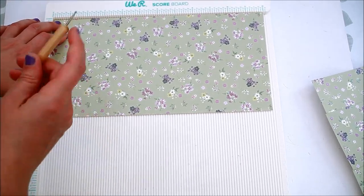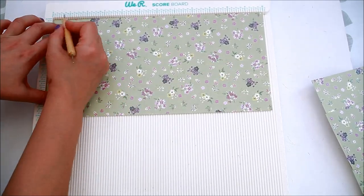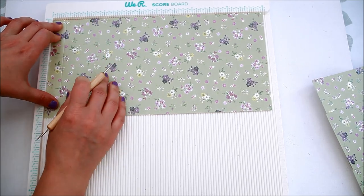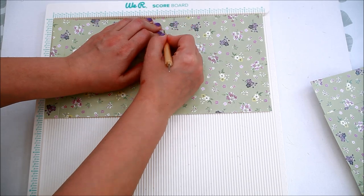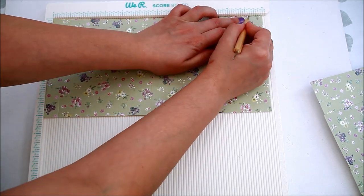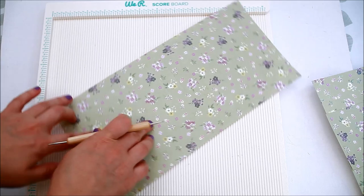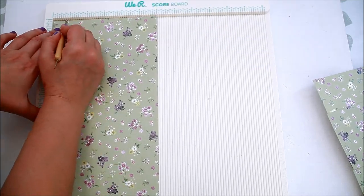For the first one I'm using a 12 by 6 inches sheet of paper and then I'm going to score on the long side 3 quarter inches, 5 and 5 eighths of inch, 6 and 3 eighths of inch, and 11 and a quarter inches.